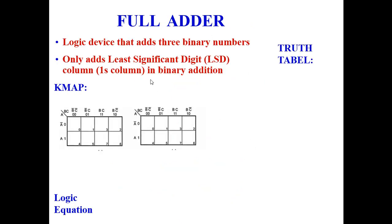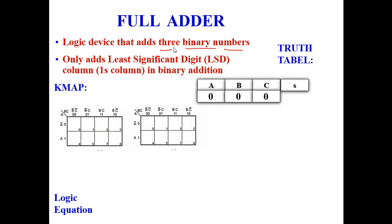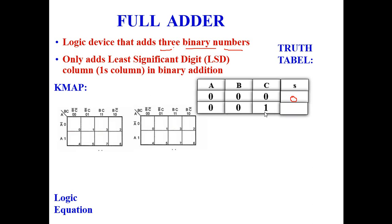The full adder adds three binary numbers. For the full adder truth table, an easy technique is to count how many 1s are present among the three inputs A, B, C. If the number of 1s is one, Sum is 1 and Carry is 0. If the number of 1s is two, Sum is 0 and Carry is 1. If the number of 1s is three, both Sum and Carry are 1.